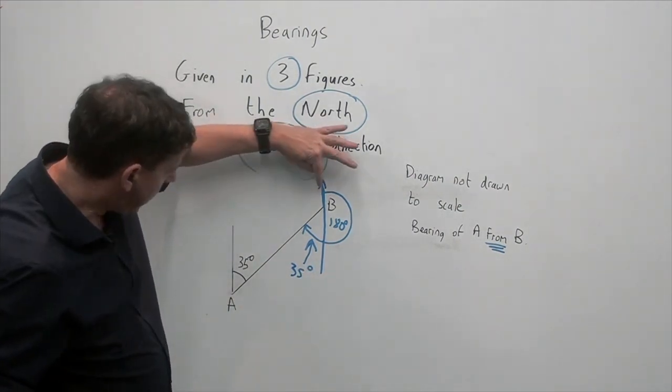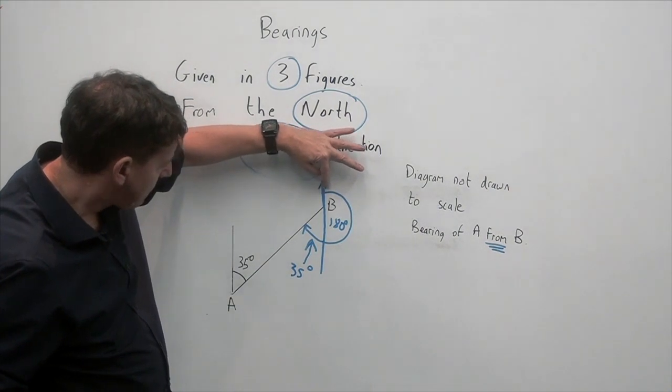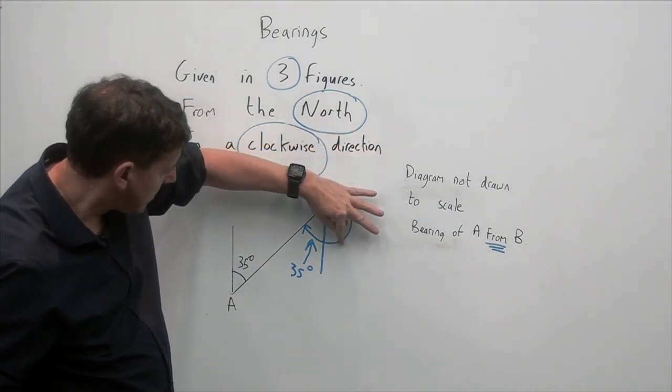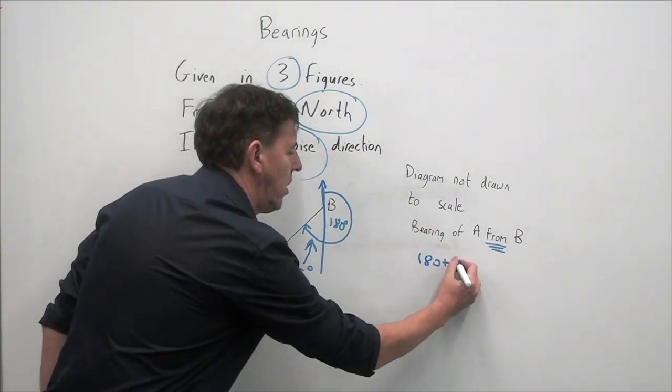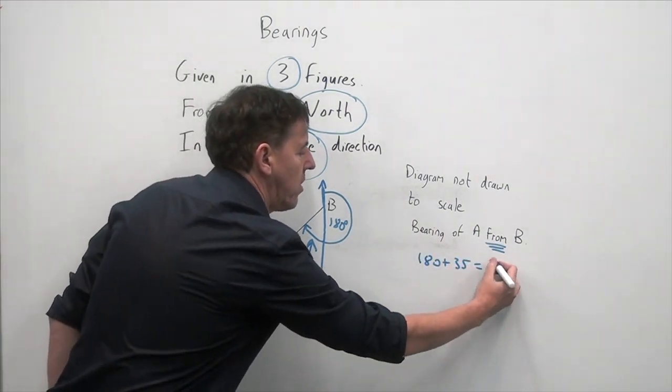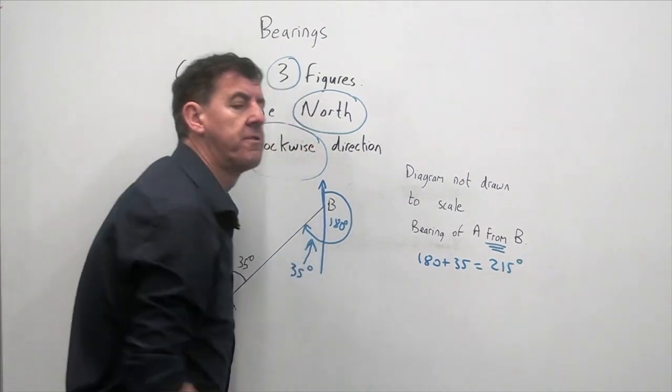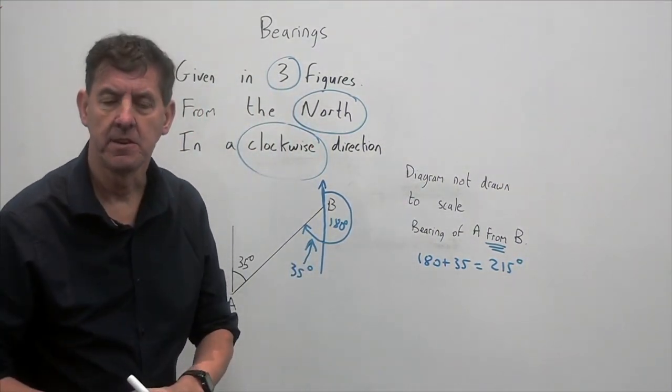So my total bearing of A from B will be 180 degrees plus the 35 degrees. So that's 180 plus the 35, which makes a grand total of 215 degrees.